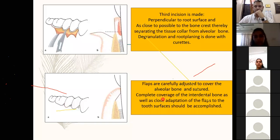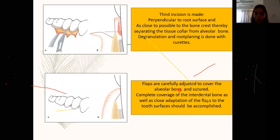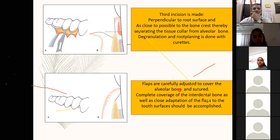Following this, the flaps are carefully opened, open flap debridement is done, root surfaces are cleaned, granulation tissue is removed, calculus if remaining is removed, and the flaps are then carefully adjusted over the alveolar bone and sutured interproximally. Complete coverage in the interdental areas is necessary for healing by primary intention. If that's not happening, you may have to do some osteoplasty to allow for close adaptation of the flap to the tooth surface.